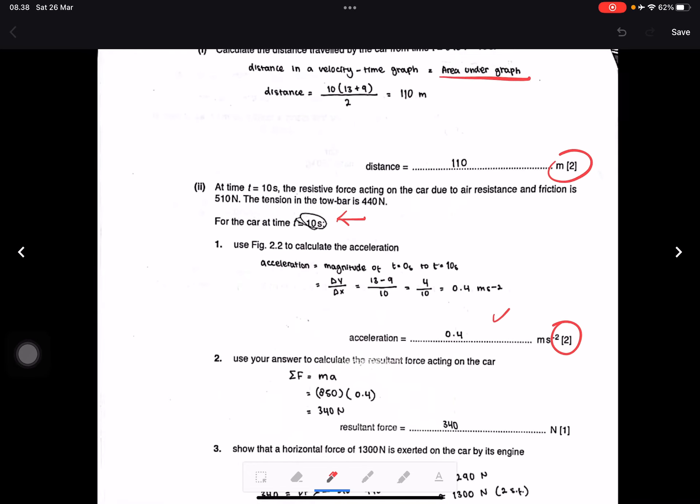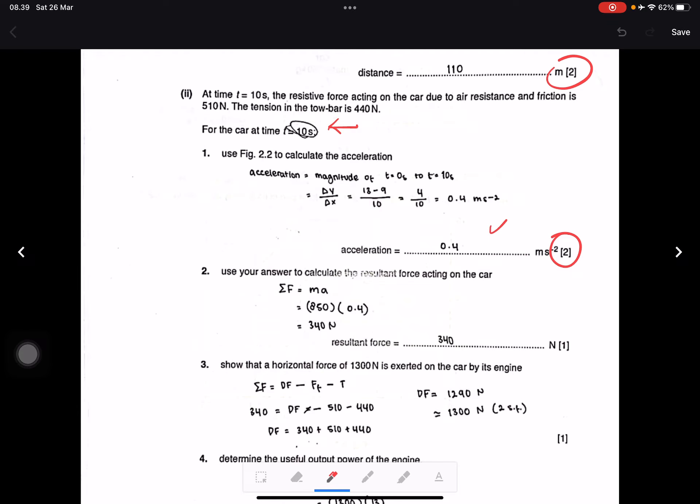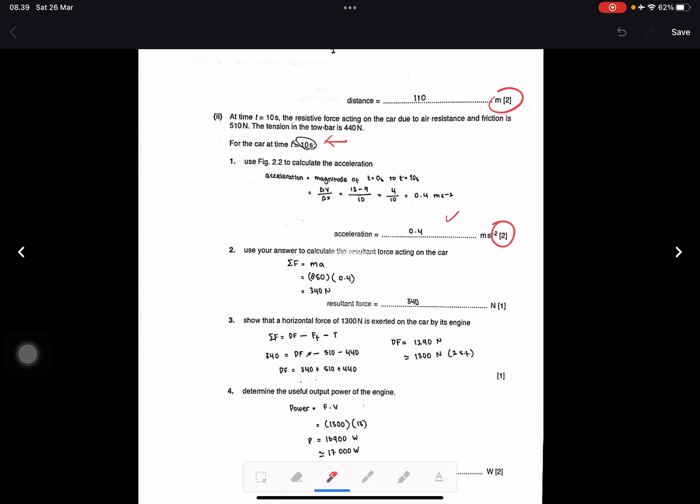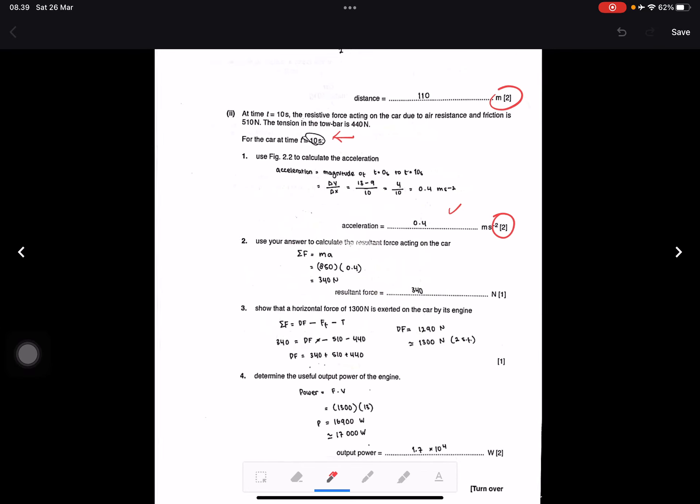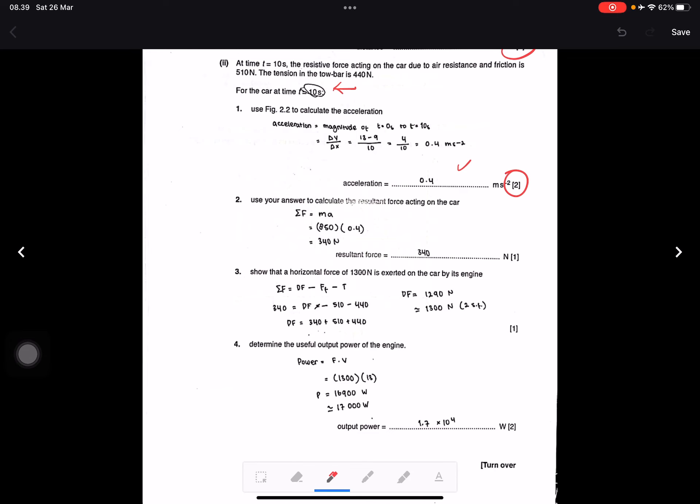So equals 4 divided by 10 equals 0.4 meters per second squared. This is correct. Question ii: Use this answer to calculate the resultant force acting on the car. We use Newton's second law: F equals ma. F equals 850 times 0.4, we get 340 newtons. Correct.